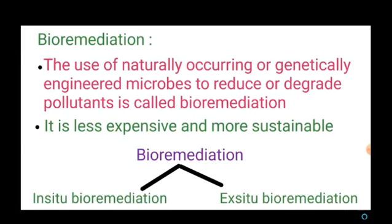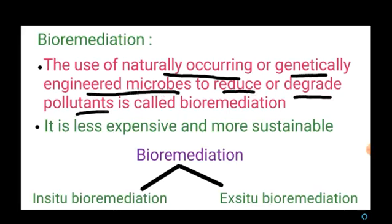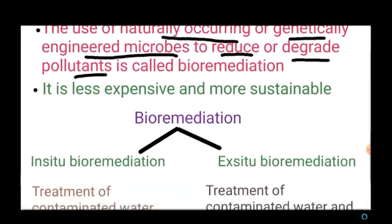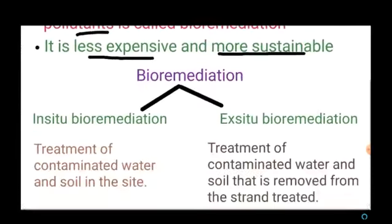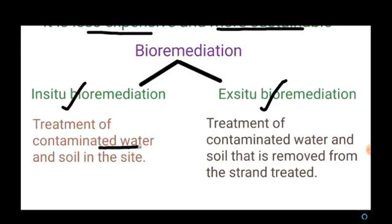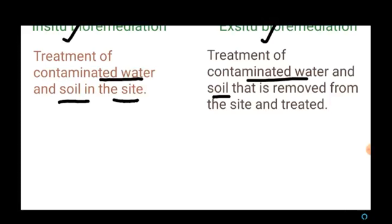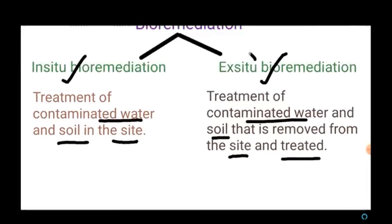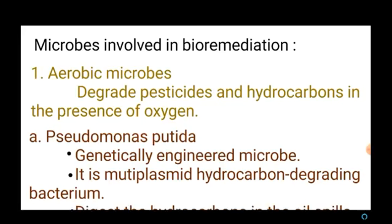Next we are going to see about bioremediation. Bioremediation is the use of naturally occurring or genetically engineered microbes to reduce or degrade pollutants. It is less expensive and more sustainable than conventional methods. There are two types: in-situ bioremediation — treatment of contaminated water and soil on the site itself — and ex-situ bioremediation — where contaminated water and soil are removed from the site and treated elsewhere.